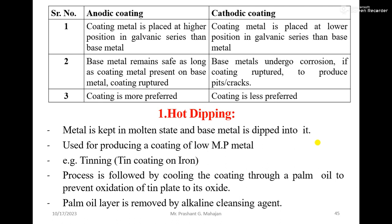In anodic coating, the coating metal is placed at a higher position in the galvanic series than the base metal. In cathodic coating, the coating metal is at a lower position. Anodic coating keeps the base metal safe as long as the coating metal is present. When cathodic coating ruptures, it produces pits and cracks and the base metal corrodes. Therefore, cathodic coating is less preferred and anodic coating is more preferred.